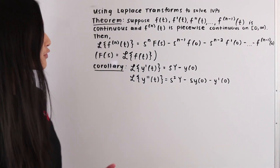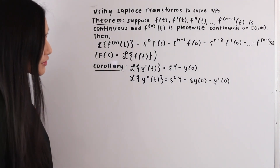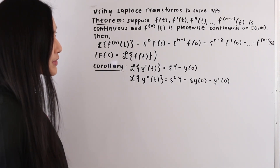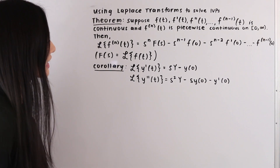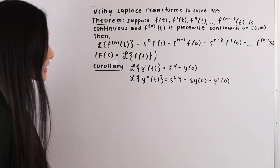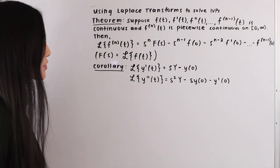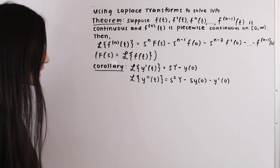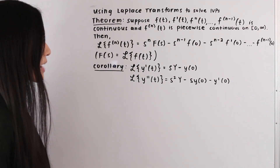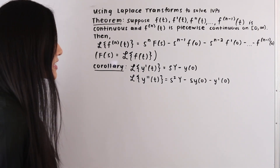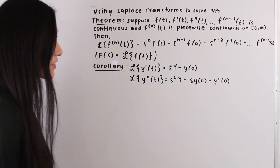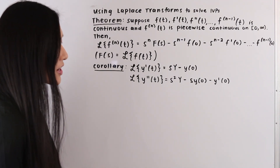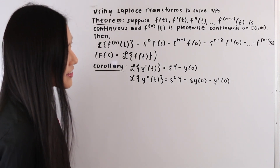To do this, we are going to be using the following theorem. Suppose f(t), f'(t), f''(t), ..., f^(n-1)(t) is continuous, and f^(n)(t) is piecewise continuous on the interval from zero to infinity. Then the Laplace transform of f^(n)(t) is equal to s^n times F(s) minus s^(n-1) times f(0) minus s^(n-2) times f'(0), minus ... minus f^(n-1)(0).